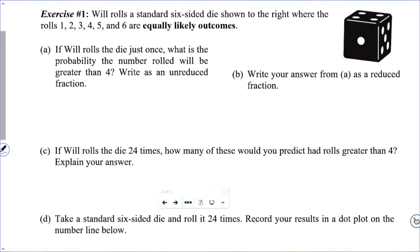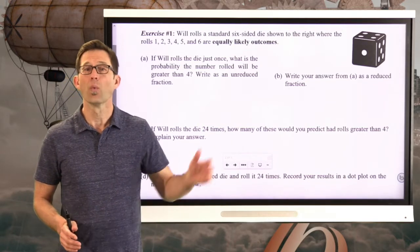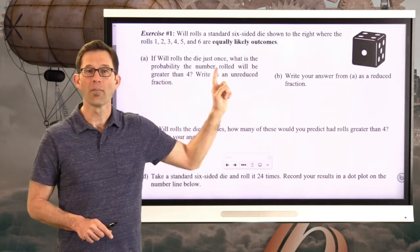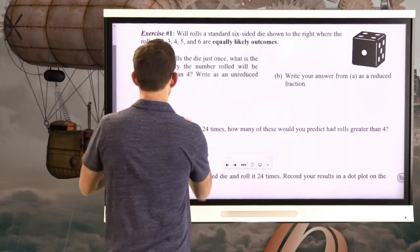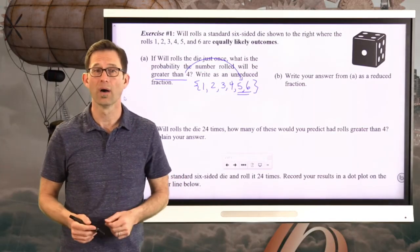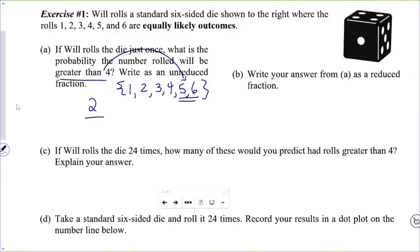Will rolls a standard six-sided die shown to the right where the rolls 1, 2, 3, 4, 5, and 6 are equally likely outcomes. Letter A: If Will rolls the die just once, what is the probability the number rolled will be greater than 4, as an unreduced fraction? Well, this is simple enough. We've got six equally likely outcomes. We want to know the probability that the number Will rolls will be greater than 4. We've got these six equally likely outcomes, and here are the ones that are greater than 4. So there are two of these outcomes that are greater than 4.